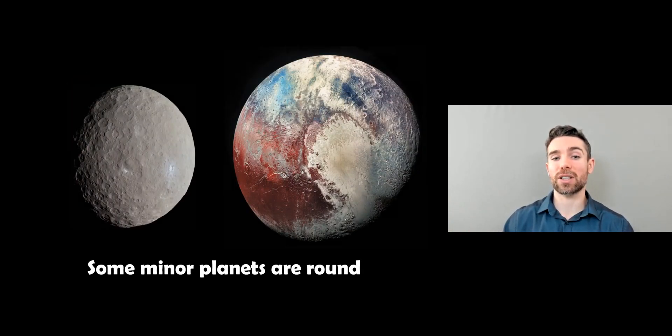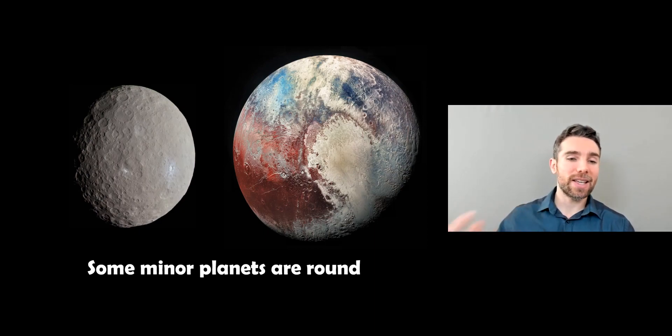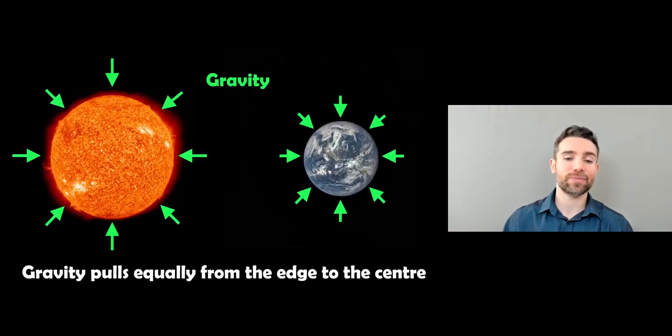These are objects that are obviously smaller than planets. They're not designated as being a planet. You've got Pluto here and Ceres. These are minor planets that are still spherical. So fairly small objects that are spherical. So what's causing that to actually happen?